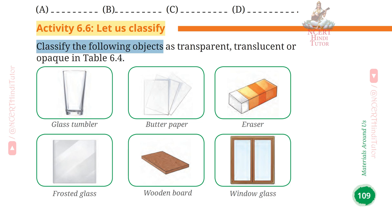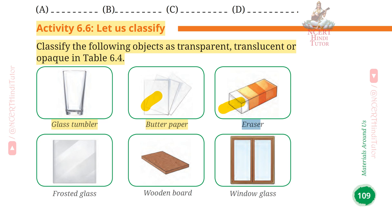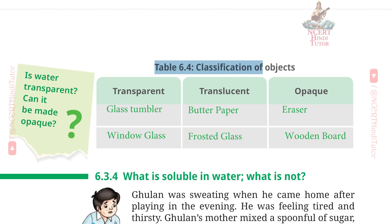Activity 6.6: Classify the following objects as Transparent, Translucent, or Opaque in Table 6.4. Column 1: Transparent — Glass tumbler, Window glass. Column 2: Translucent — Butter paper, Frosted glass. Column 3: Opaque — Eraser, Wooden bowl.